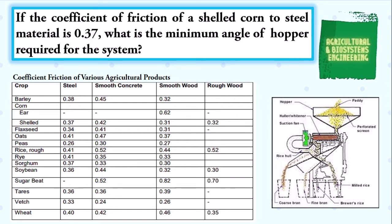In our problem, we have the crop to be the shelled corn. The material to be used is steel, having the coefficient of friction of 0.37.